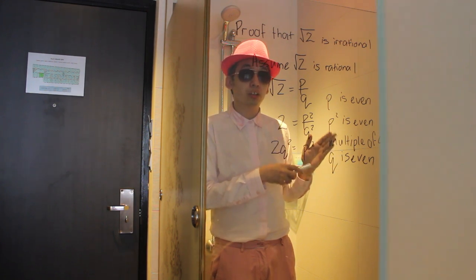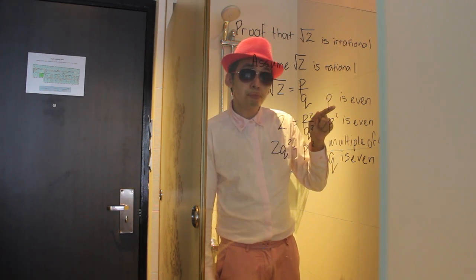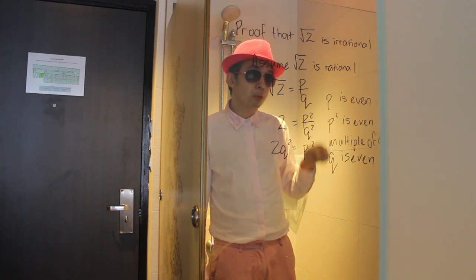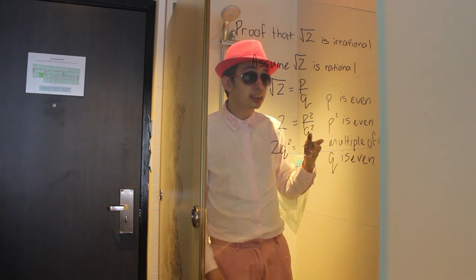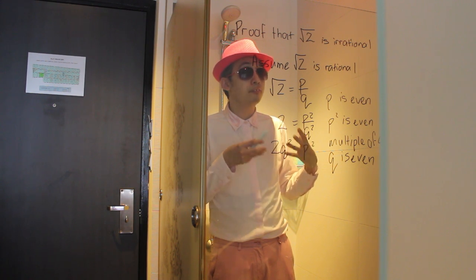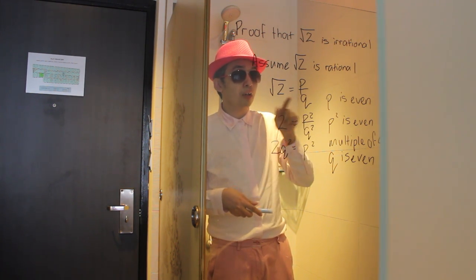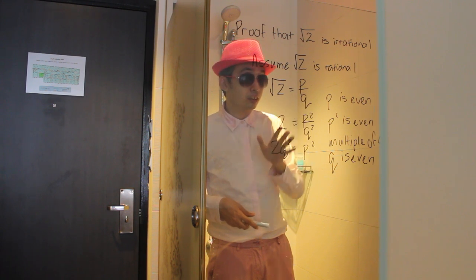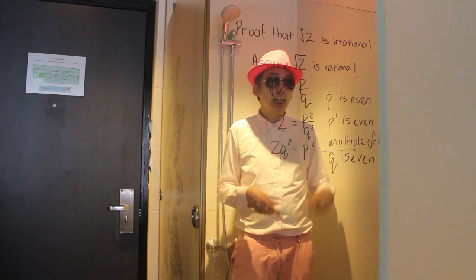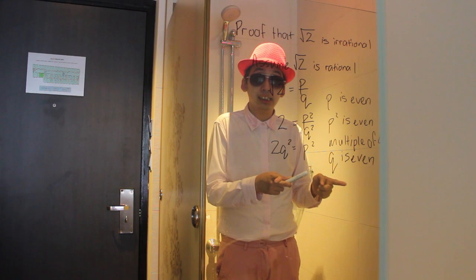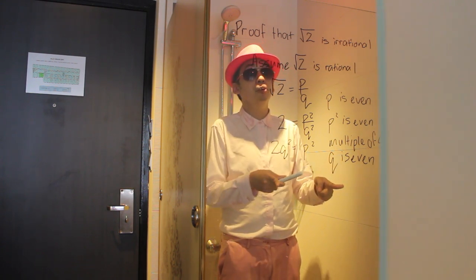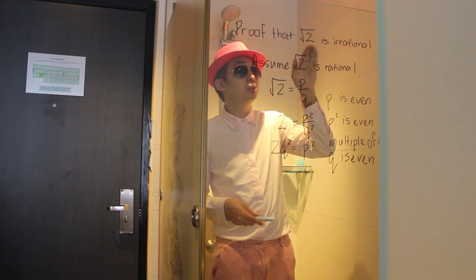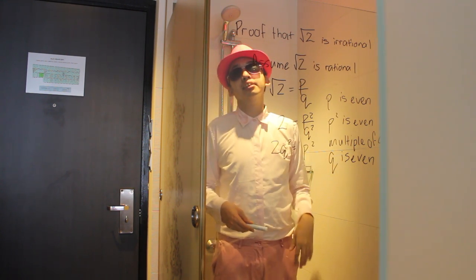Here we arrive at a contradiction. We have P is even and we also have Q is even. If both are even, that means they have common factors, which goes against our first rule that these two integers cannot have common factors. Thus we arrive at a contradiction, and therefore we have proven that root 2 cannot be rational — root 2 is indeed irrational.